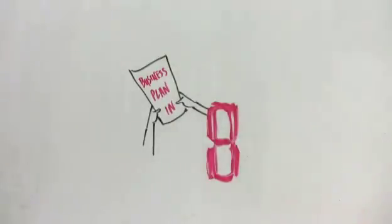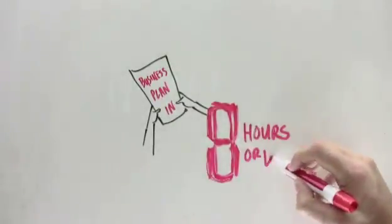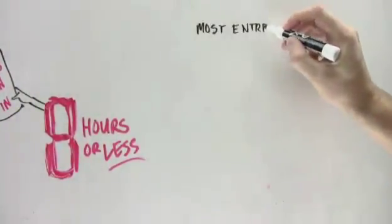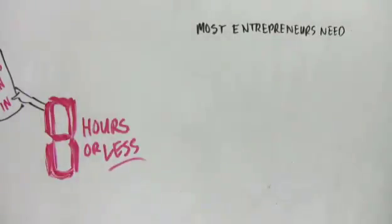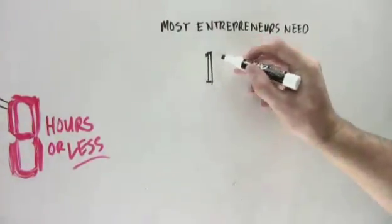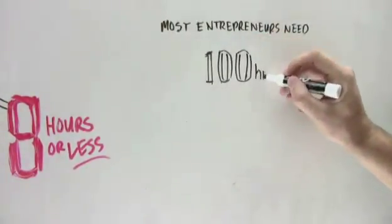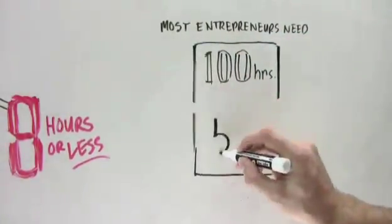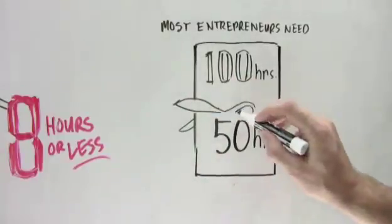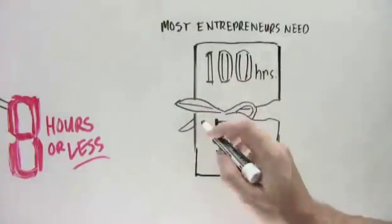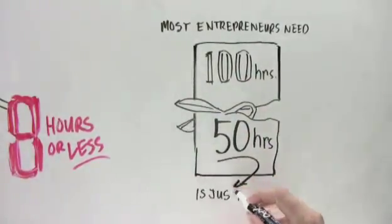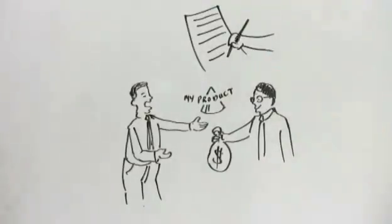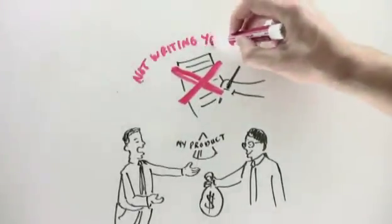So let me get back to that bold promise I made you at the beginning of this video. I told you I would give you a shortcut to allow you to complete your business plan in eight hours or less. Now, by revealing that there are only 10 key questions you must answer in your business plan and letting you know that you can avoid all the other stuff, I've probably already cut the time needed to complete your plan in half. But since most entrepreneurs need 100 hours or more to complete their business plans, even cutting your time in half means that you still need about 50 hours or more to complete your plan.